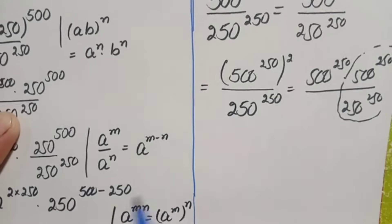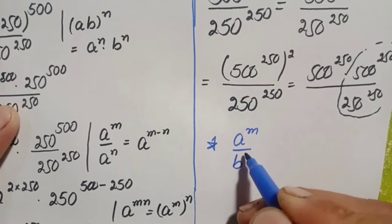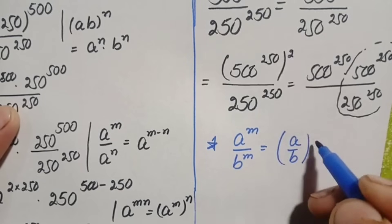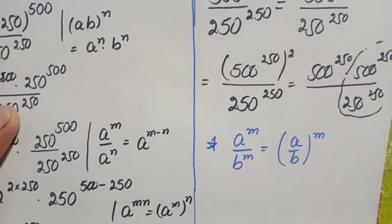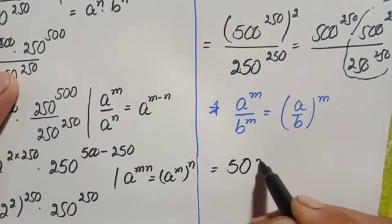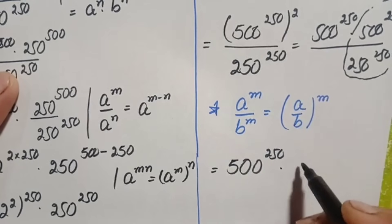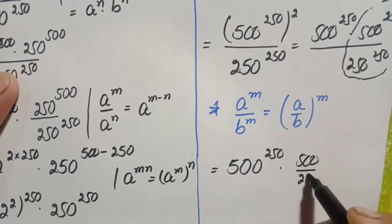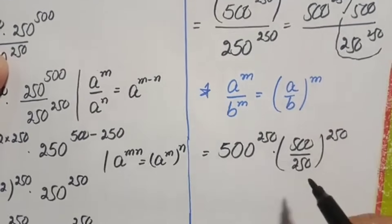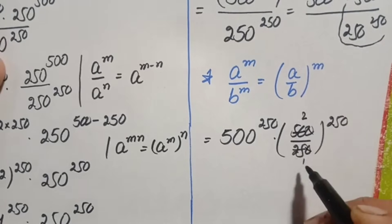The identity is: a raised to power m divided by b raised to power m, which can also be written as (a divided by b) all raised to power m. So using this identity, this number will become 500 raised to power 250 times 500 divided by 250, all raised to power 250. Simplifying: 0 cancels with 0, and 500 divided by 250 gives 2.